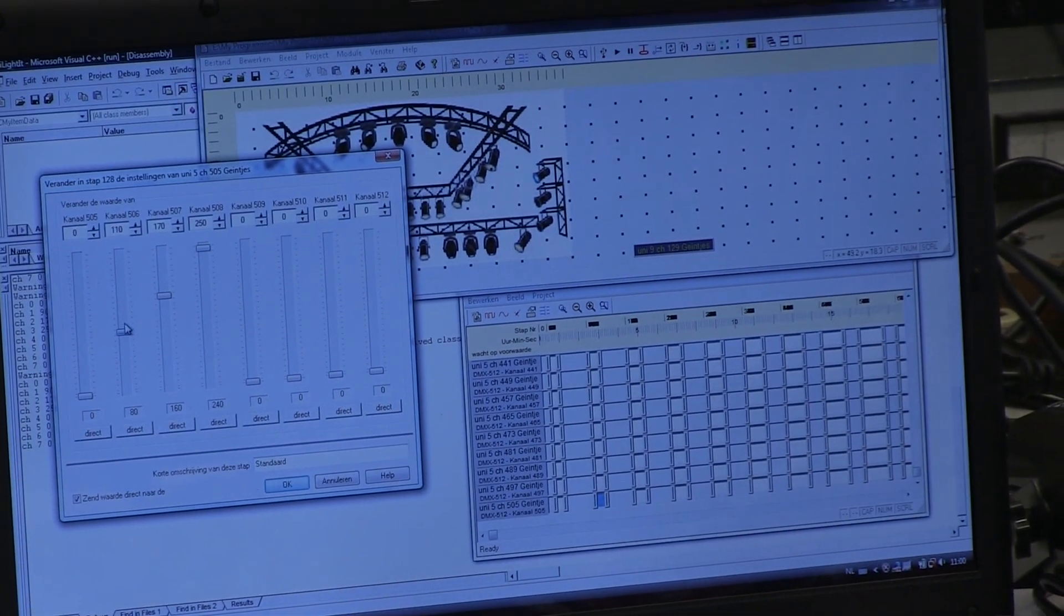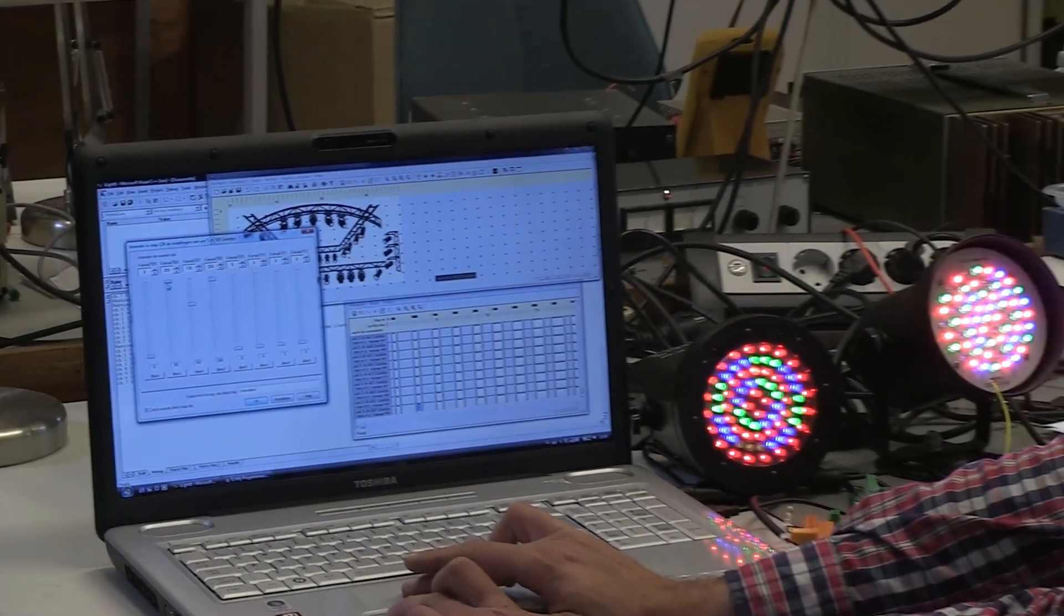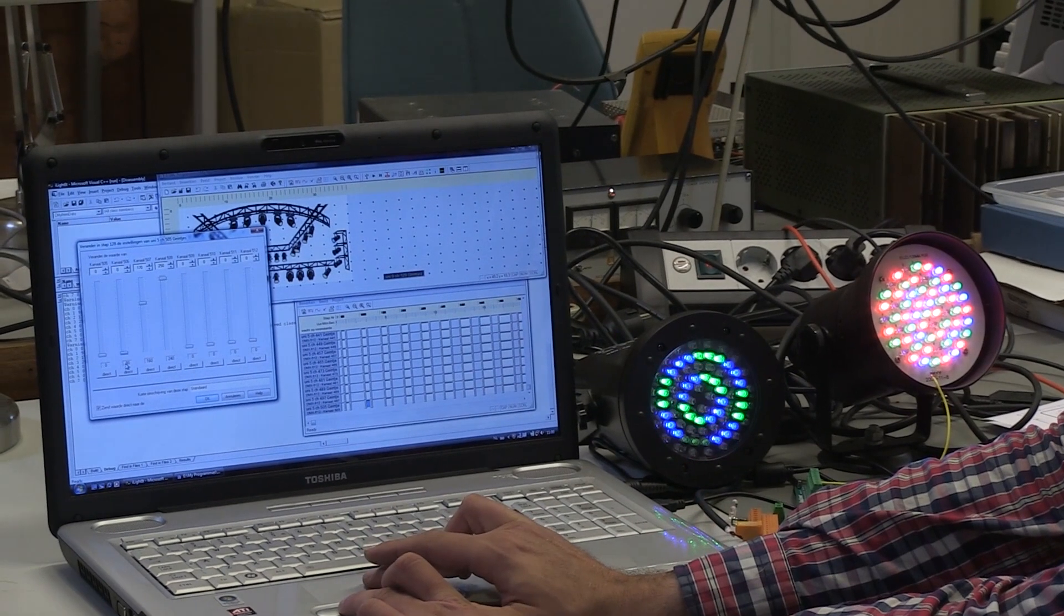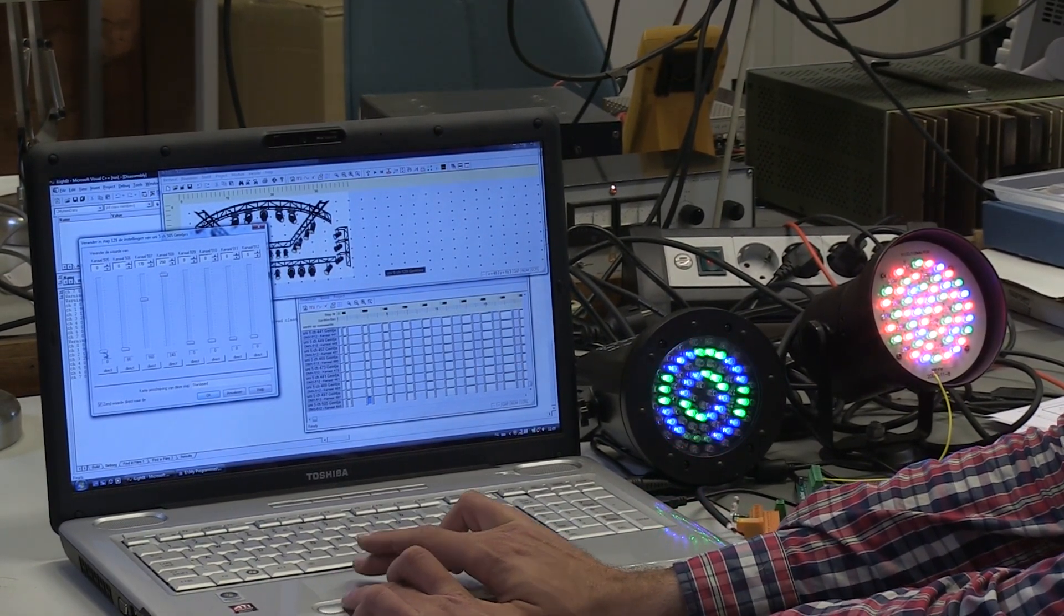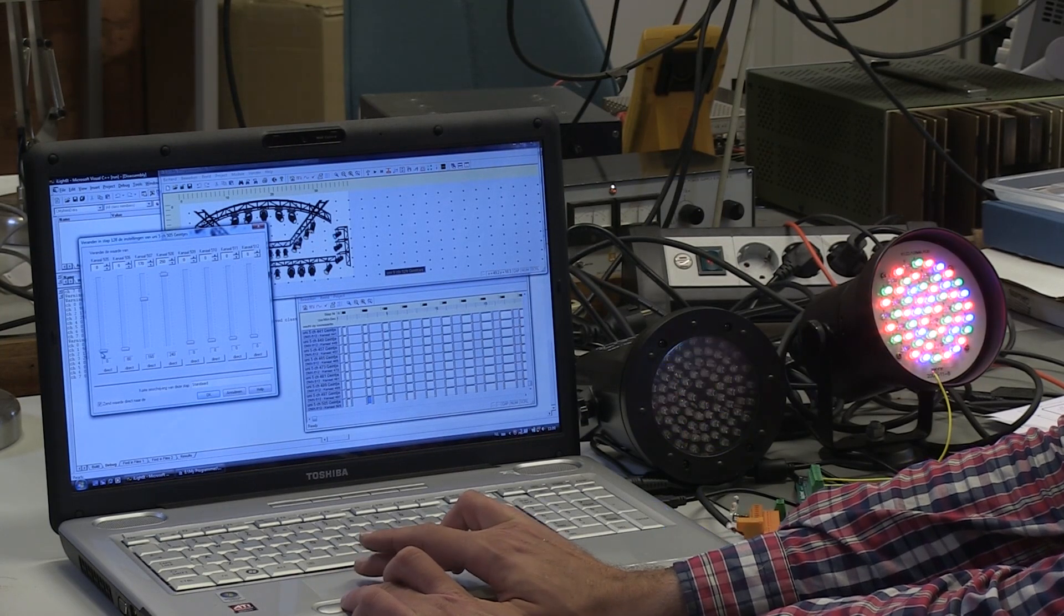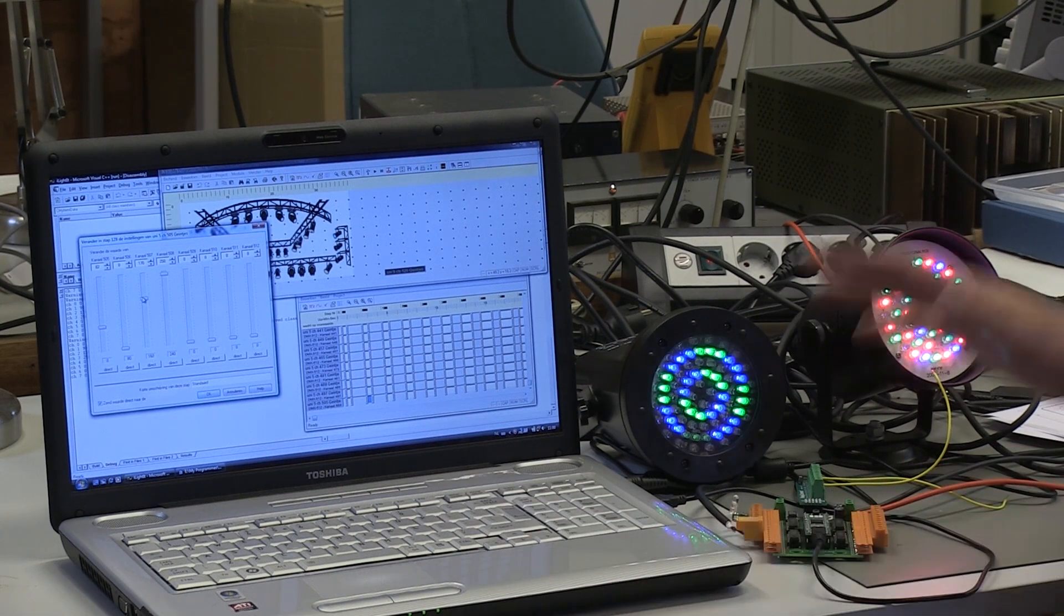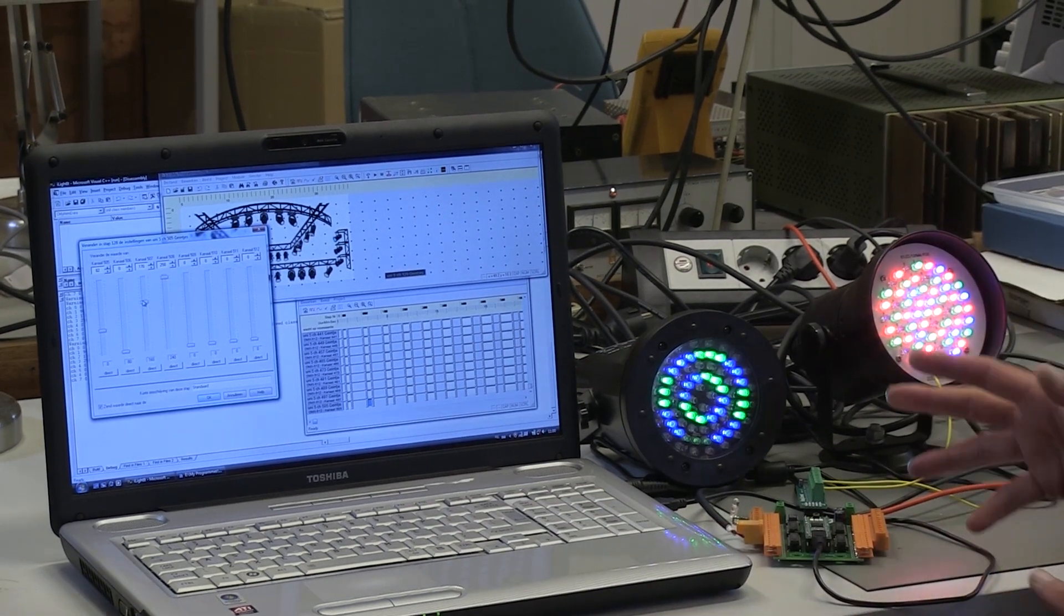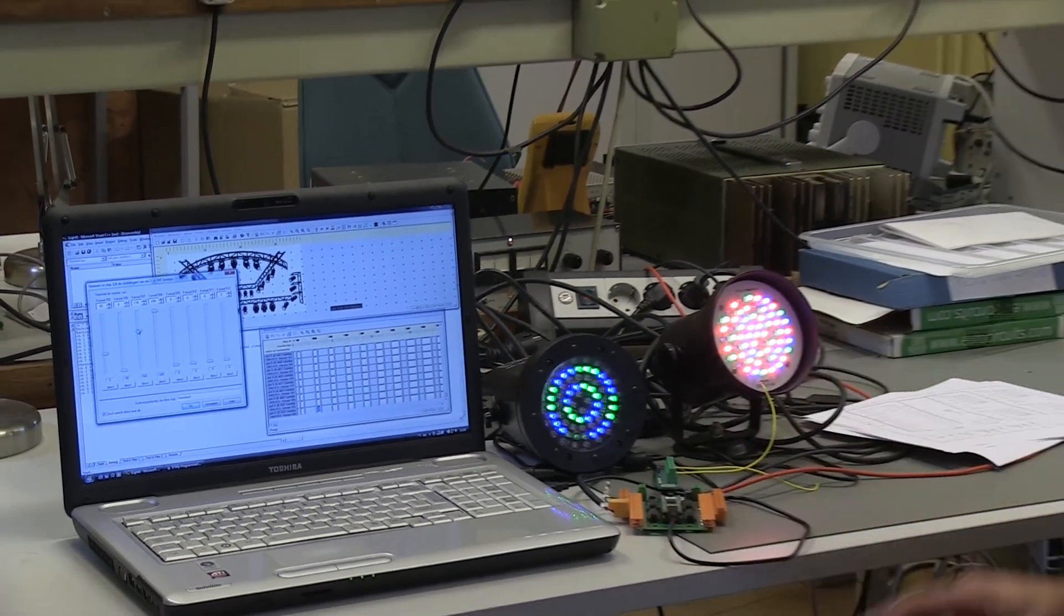So this window controls one light? I hope so. You can see this one moving now. It's changing the red color. And now I will change the green and the blue. You can change any channel you want and it depends on the fixture that you have connected what happens of course.